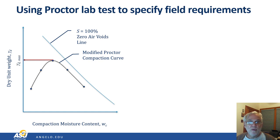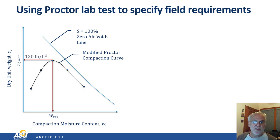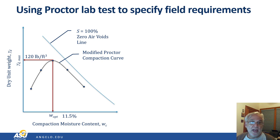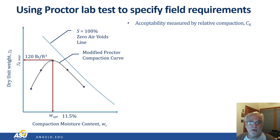At the peak of the curve, we will have the maximum dry density, gamma D max, which will occur at the optimum water content, W optimum. Let's assume for this particular soil and compaction energy, the maximum dry unit weight is 120 pounds per cubic foot, and the optimum moisture content is 11.5%. We'll use these data from the Proctor Compaction Test to determine if the soil is properly compacted in the field.